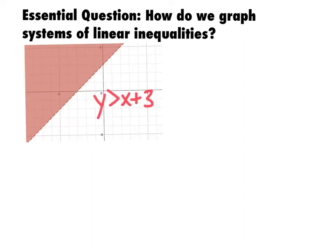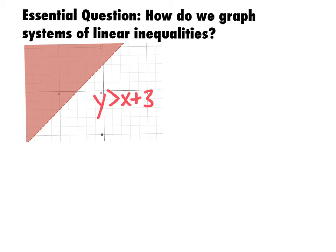Here's an example of a linear inequality. This is y is greater than x plus 3. Whenever y is greater than, we are shading above. It's strictly greater than, so this is a dashed line, and the solutions are all of these ordered pairs — all the points inside the shaded region.